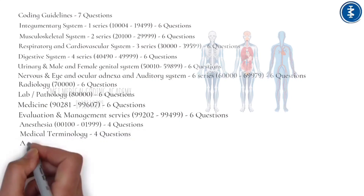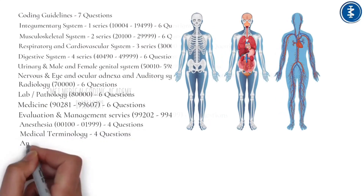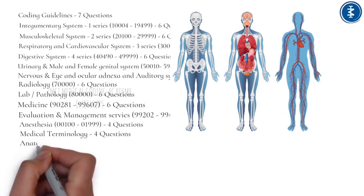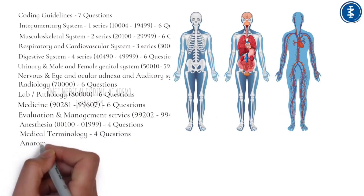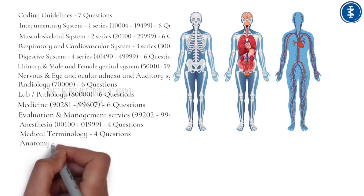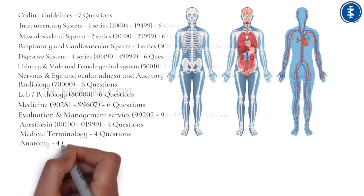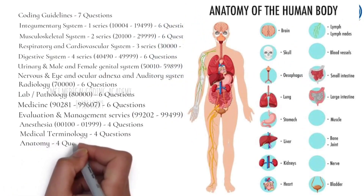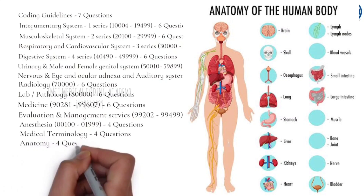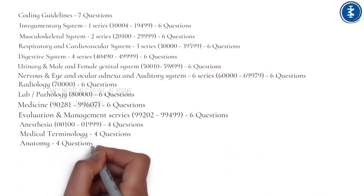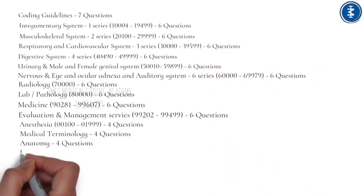The Human Anatomy and Physiology section has 4 questions. It covers anatomy, which refers to the internal and external structures of the body and their physical relationships, and physiology, which refers to the study of the functions of those structures.